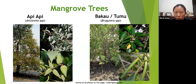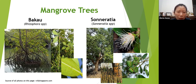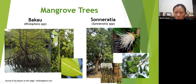Bakau trees come in a couple of genera. Bruguiera has knee roots and a long hypocotyl. Another type of bakau is Rhizophora, which forms the bulk of the mangrove forest — about 70 to 90 percent. Rhizophora species have very distinctive prop roots and a very long hypocotyl, nearly 30 to 40 cm long.